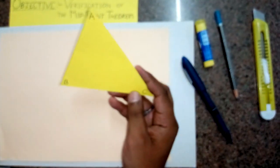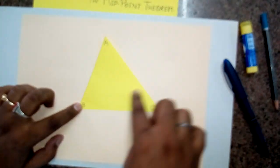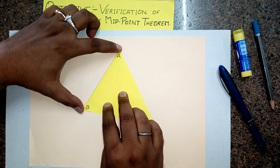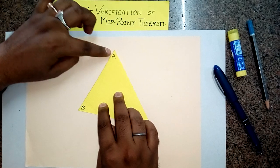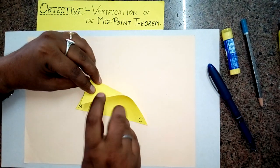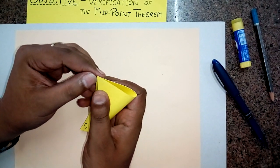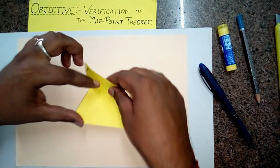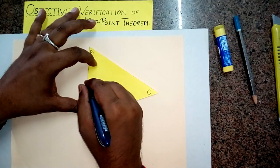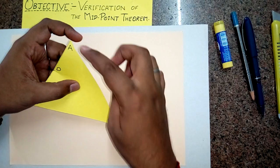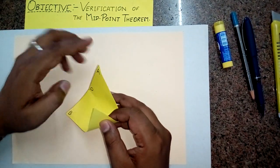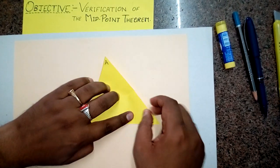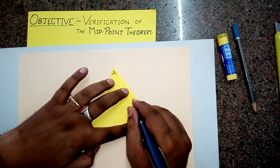I have already cut the triangle ABC. Now the theorem requires us to get the midpoints of sides AB and AC. To obtain the midpoint of AB, watch carefully — I am folding the side AB so that point A overlaps with point B. Press it firmly to get a clear midpoint, and I am naming it D. In the same way, to obtain the midpoint of AC, fold so that C overlaps with A. Press it firmly to get the midpoint of AC, and I am naming it E.